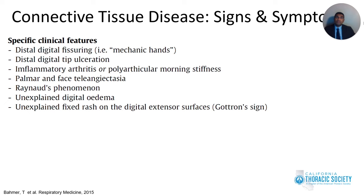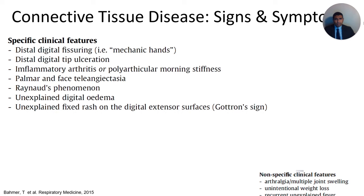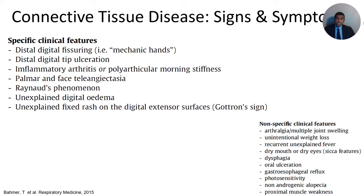Common signs and symptoms with connective tissue diseases include specific features such as distal digital fissuring, digital tip ulceration, inflammatory arthritis or morning stiffness, palmar and facial telangiectasias, Raynaud's phenomenon, digital edema, and fixed rash on the digital extensor surfaces known as Gottron's sign. Nonspecific clinical features include arthralgias, unintentional weight loss, unexplained fever, dry mouth or dry eyes, dysphagia, oral ulceration, gastroesophageal reflux disease, photosensitivity, alopecia, and proximal muscle weakness.